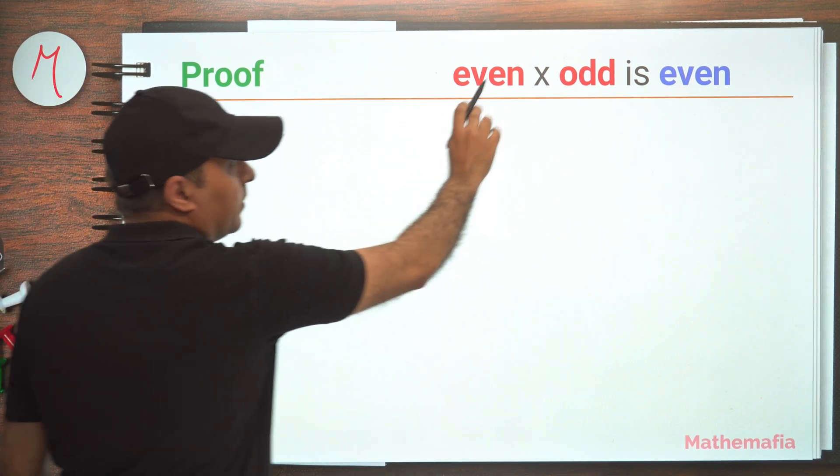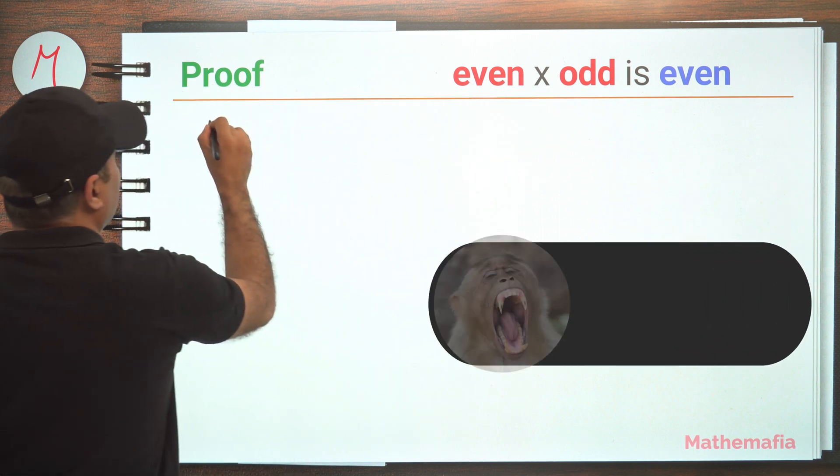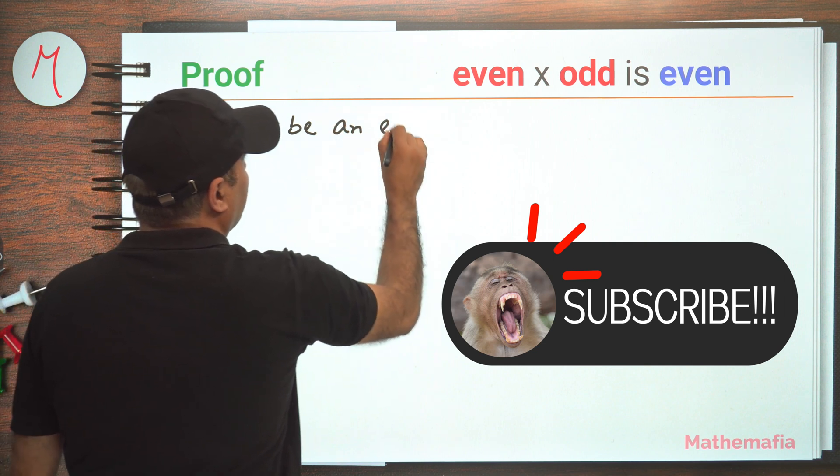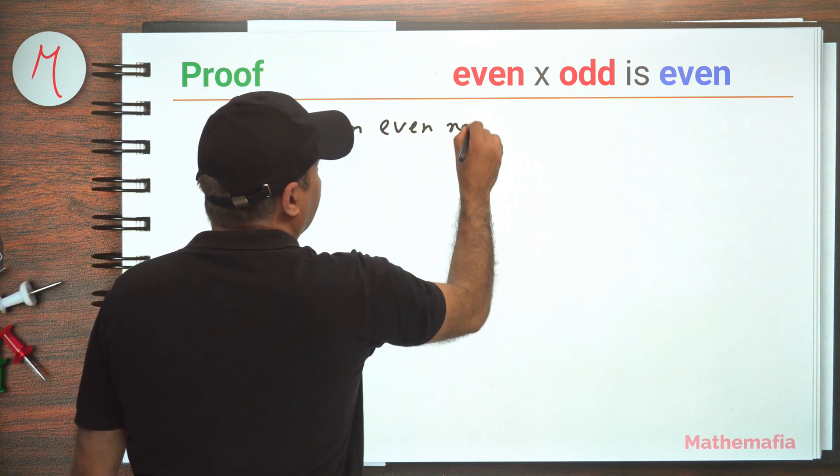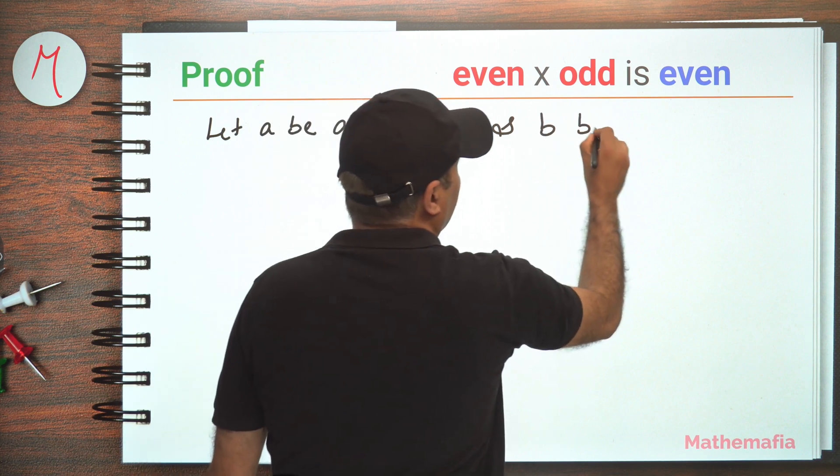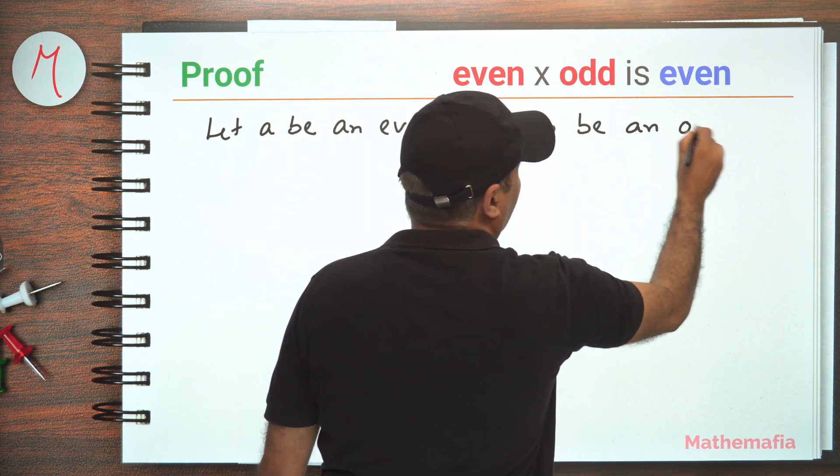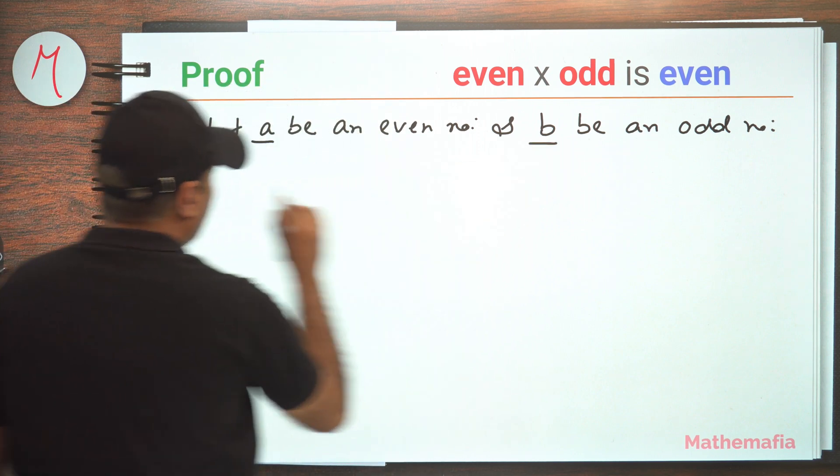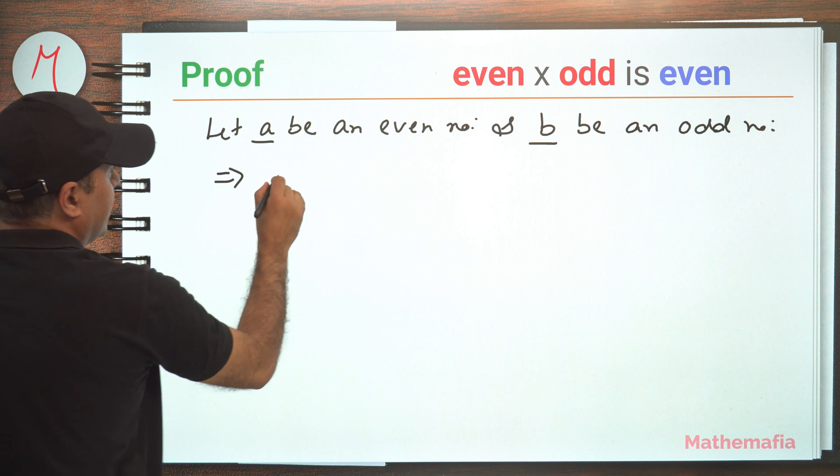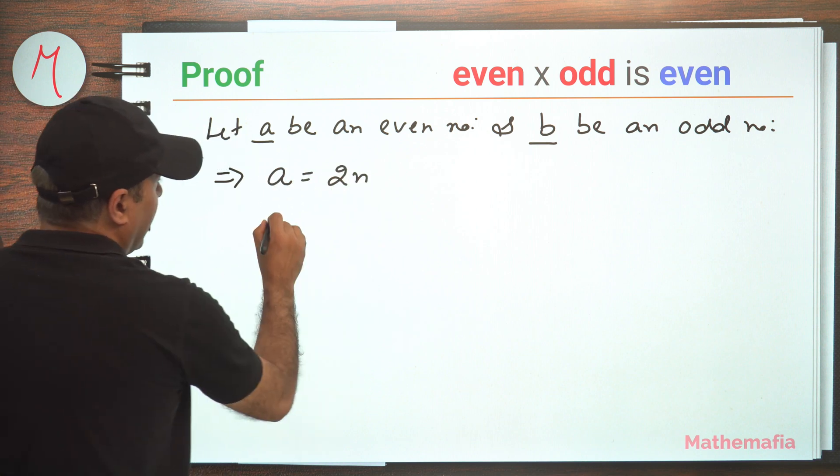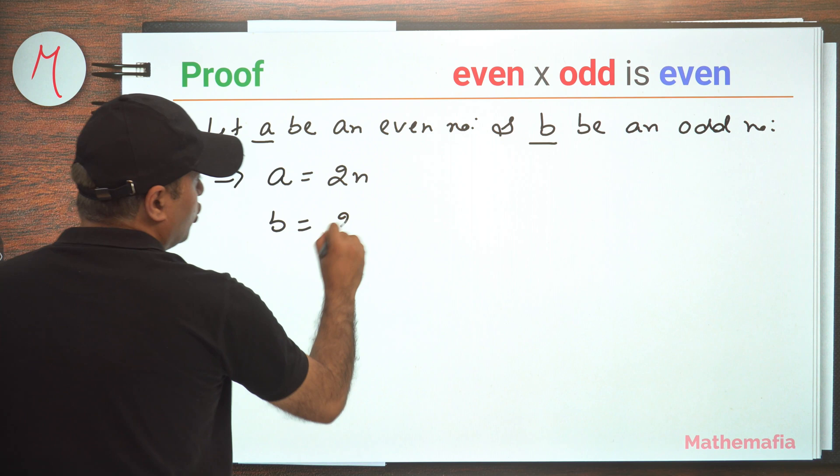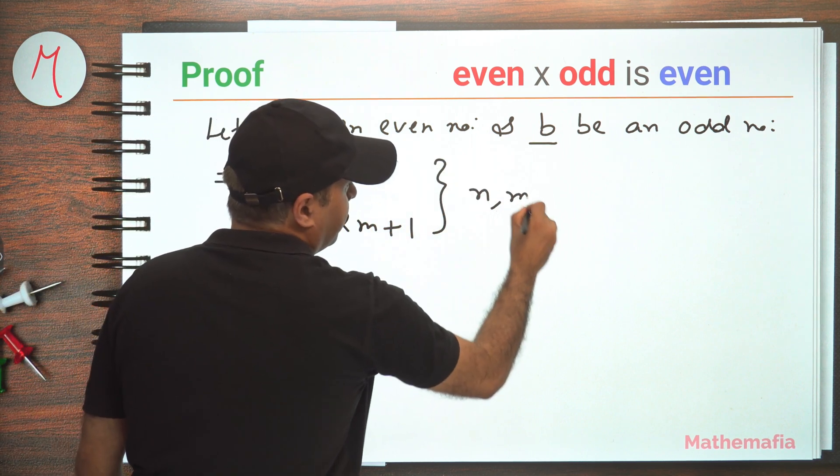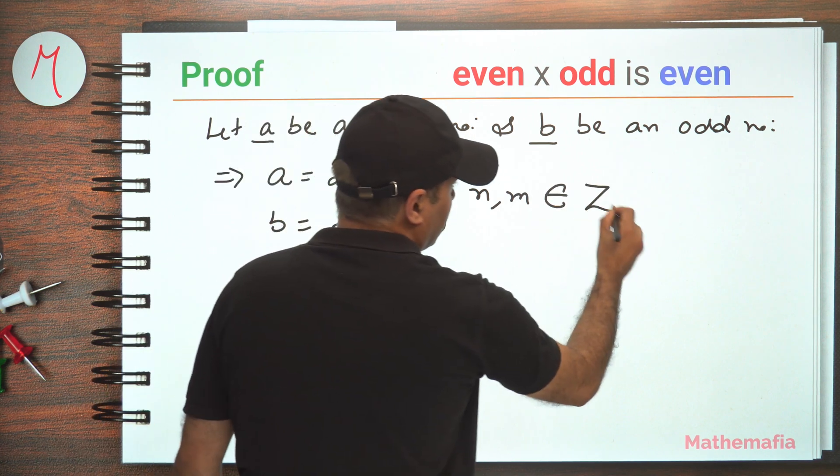So let's take one even number and one odd number. Let a be an even number and b be an odd number. So a is even and b is odd. So definitely I can write a as 2n and b can be written as 2m plus 1, where both n and m are integers.